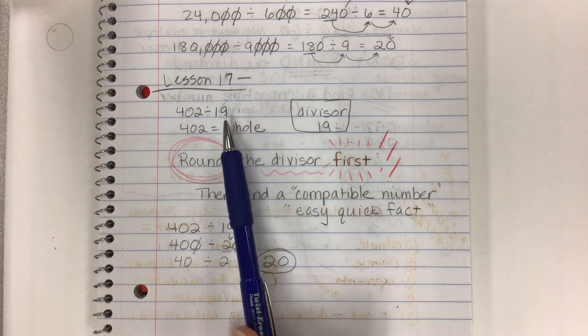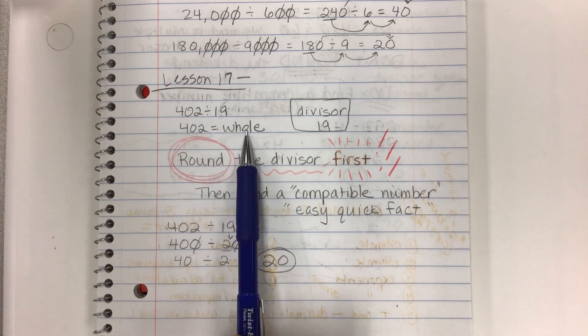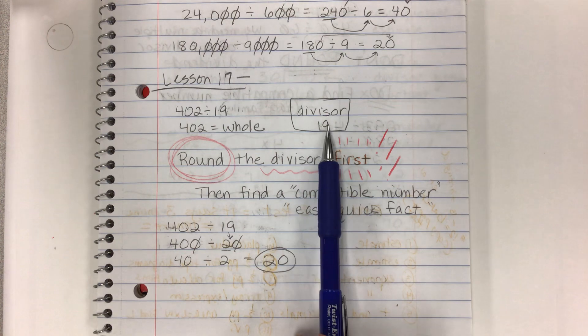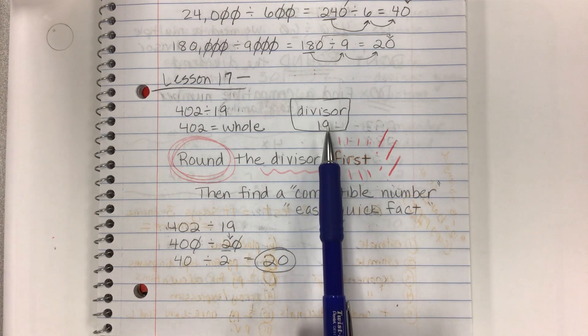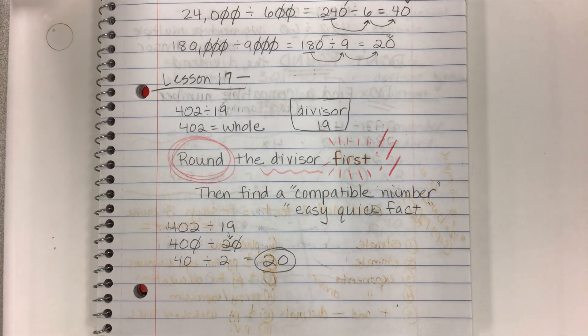If you learn anything today, it's going to be to round the divisor first every single time. So which one's the divisor? It's the number on the outside of the bracket, or it's the second number. This is the whole. 402 is the whole. The divisor is 19. So we're going to be estimating today to make our division super, super easy.